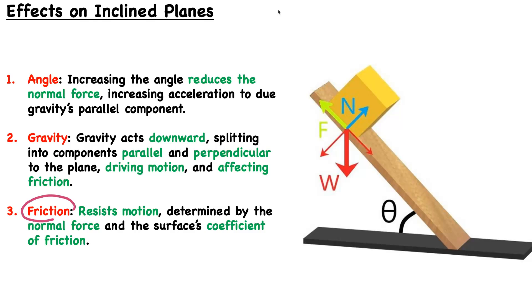Lastly, we have friction, which is further intertwined with the other factors. Friction resists motion, and it's determined by the normal force and the surface's coefficient of friction. The coefficient of friction basically refers to what the surface is made of — some surfaces make it harder, and some make it easier. The normal force goes opposite the force down on the surface. Depending on the normal force, it will have an effect on the force of friction — the larger the normal force, the greater the force of friction. These are the three factors key to understanding inclined plane systems.